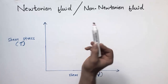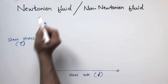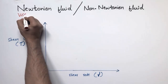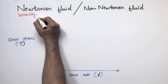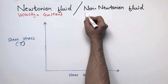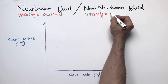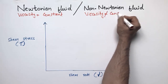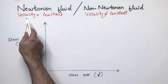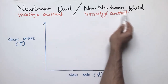So depending upon the viscosity, we have two different types of fluid. One is Newtonian fluid and one is non-Newtonian fluid. In the case of Newtonian fluid, the viscosity of the fluid is constant. While in the case of non-Newtonian fluid, the viscosity is not constant — it increases or decreases with the shear stress. If viscosity is constant, we call it Newtonian fluid; if not constant, we call it non-Newtonian fluid.